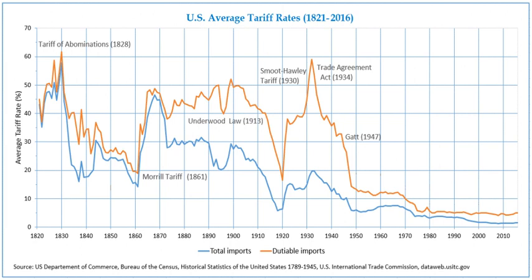Tax dumping occurs when some tax haven states have lower corporate and personal tax rates. Social dumping occurs when a state reduces social contributions or maintains very low social standards — for example, in China, labor regulations are less restrictive for employers than elsewhere. Environmental dumping occurs when environmental regulations are less stringent than elsewhere.